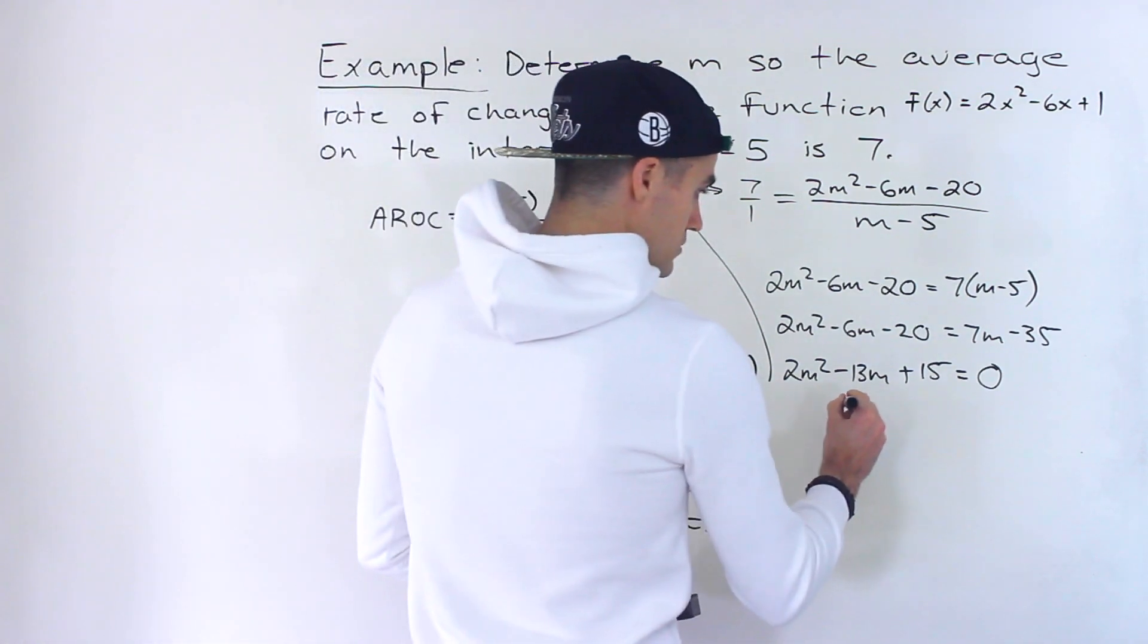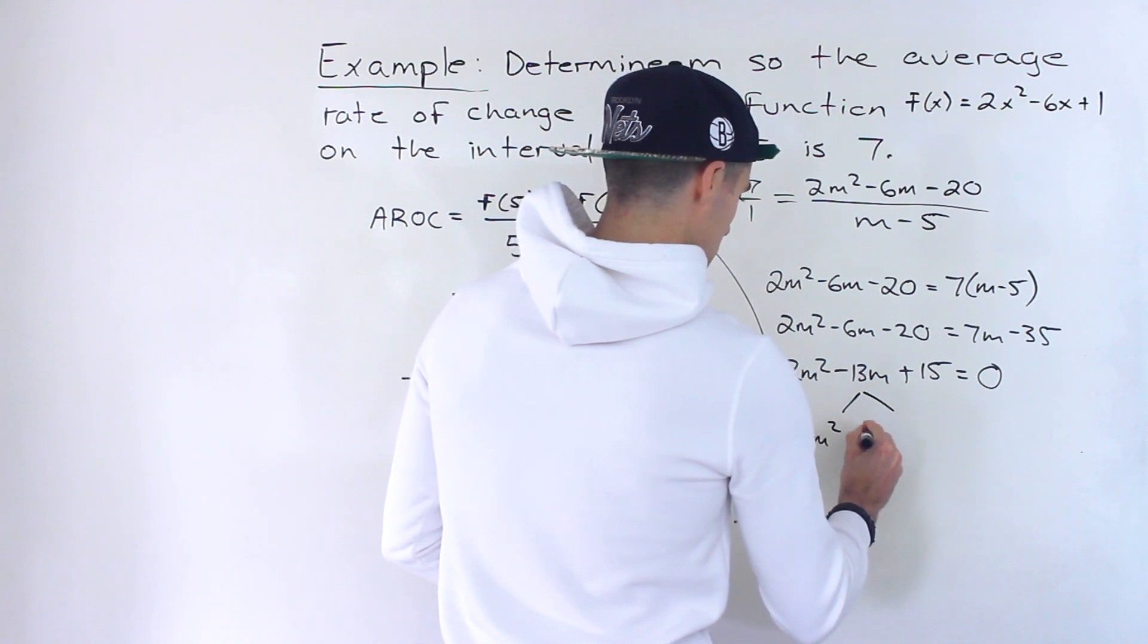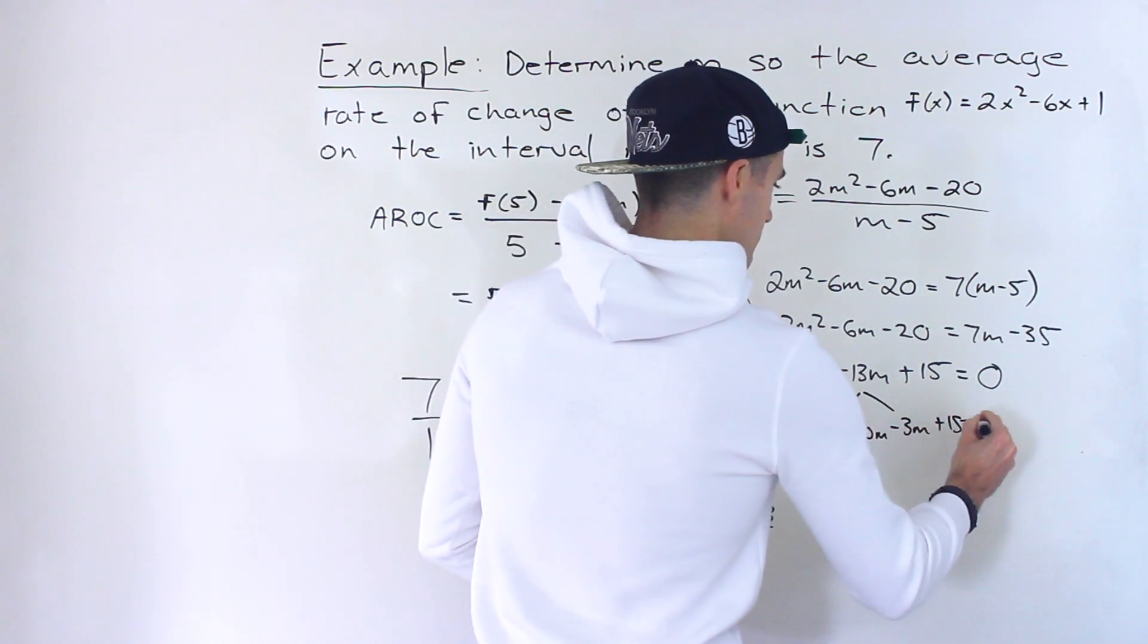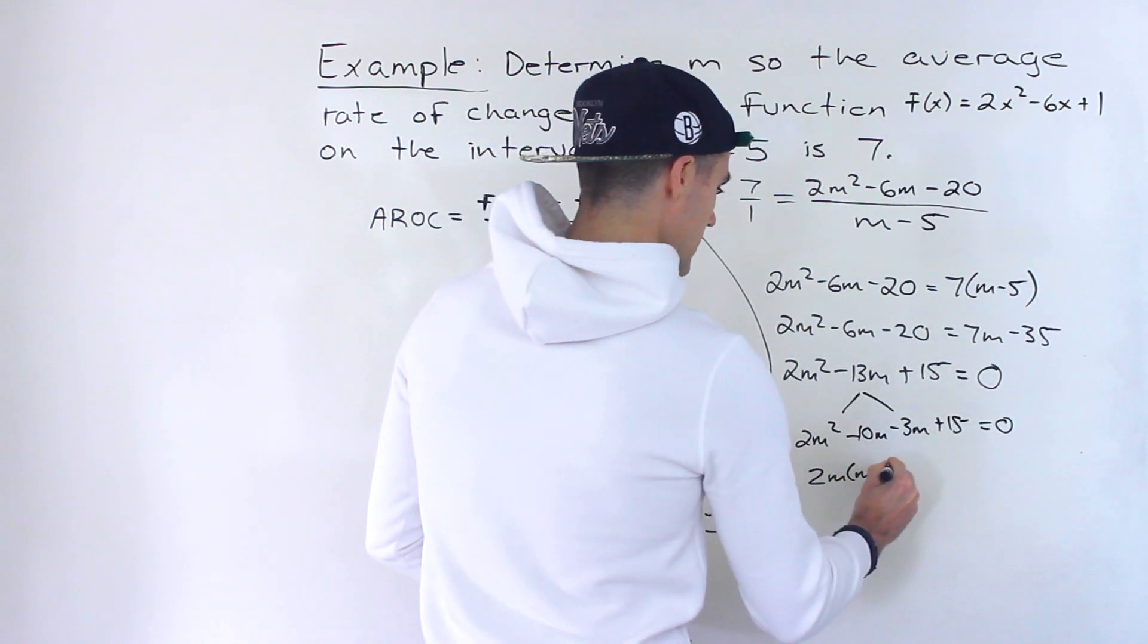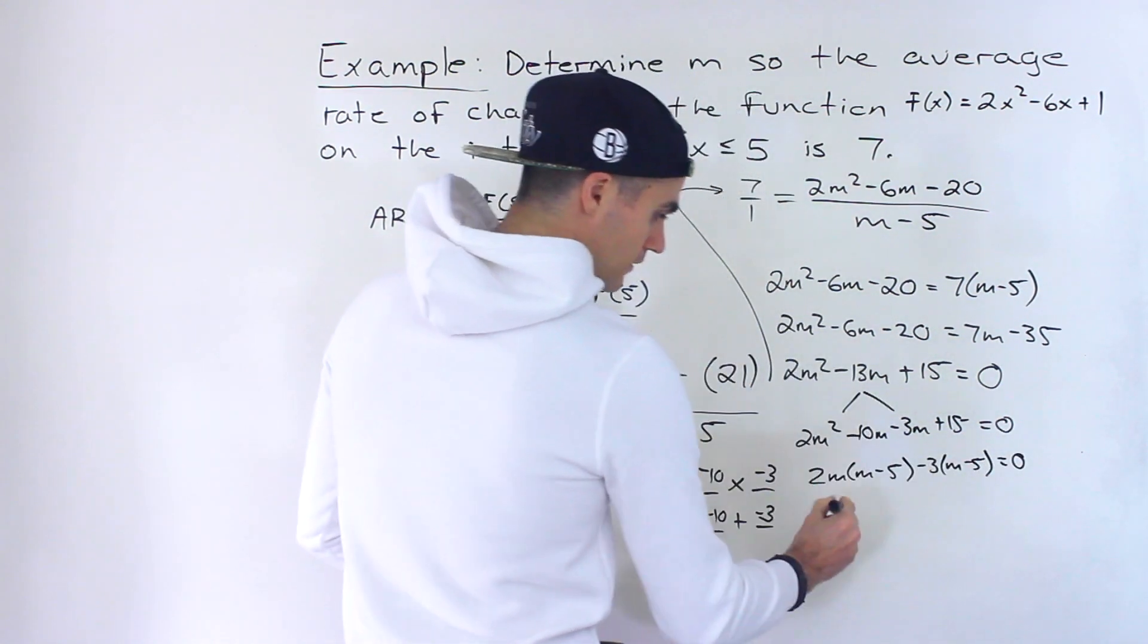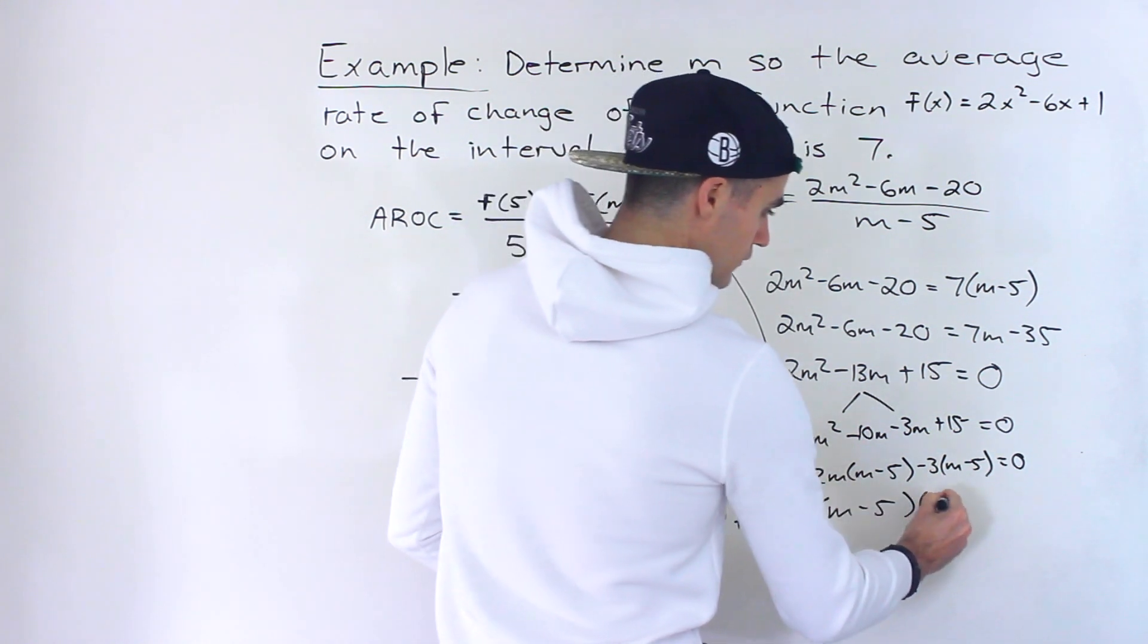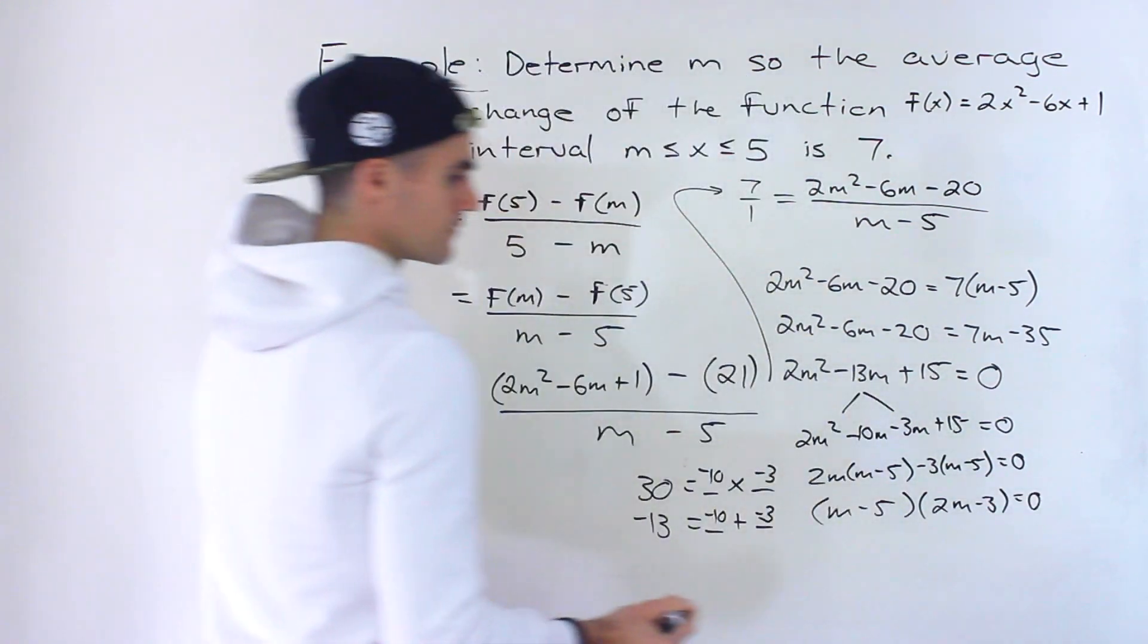So what we can do, decompose this to those two numbers. Like that. Notice we could take out a 2m, m - 5, minus 3m - 5. And then we could factor out the m - 5. And we're left with 2m - 3. Like that.